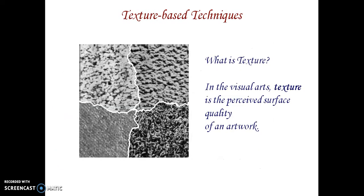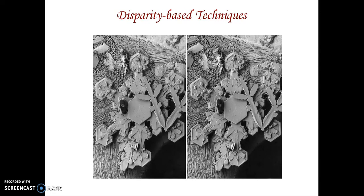These are texture-based techniques. There is some differentiation in cloths based on the textures. A visual large structure is a precise surface quality. That is mentioned as different structures.